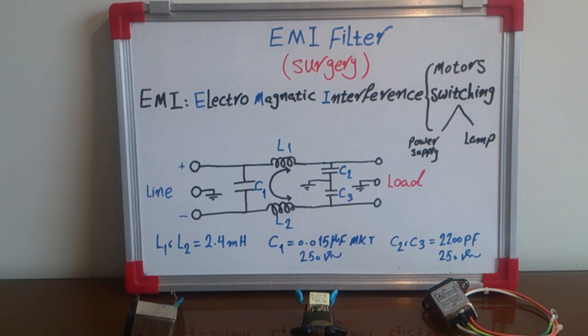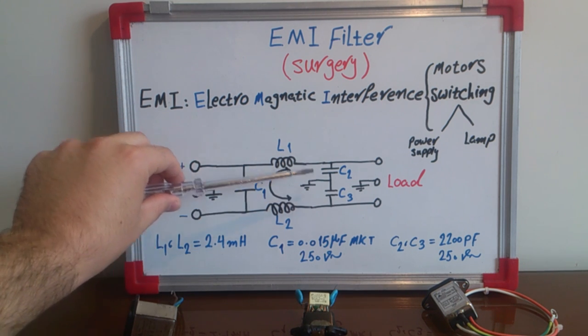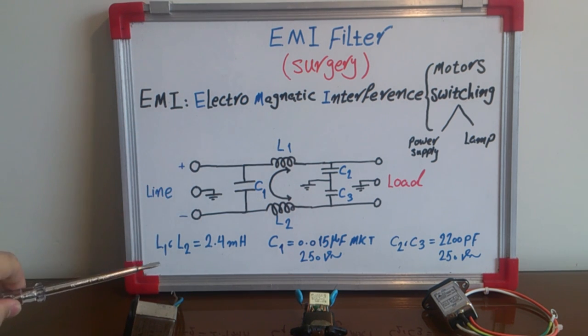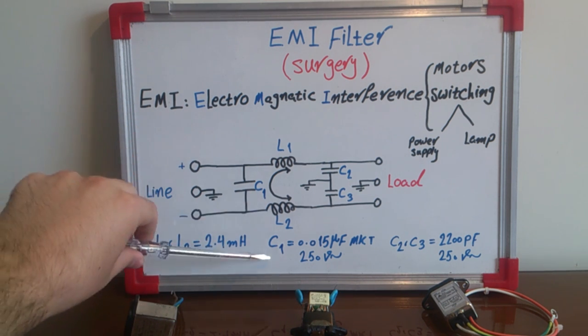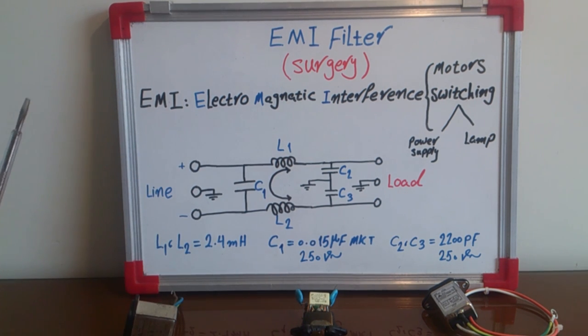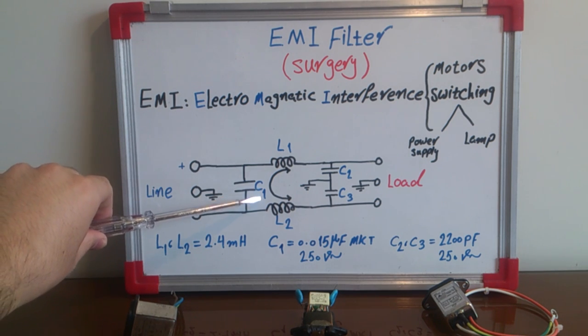Each EMI filter has three capacitors and two inductors. You can watch the values of the capacitors and inductors here. One point: the C1 capacitor number one is MKT form and we can watch this here.